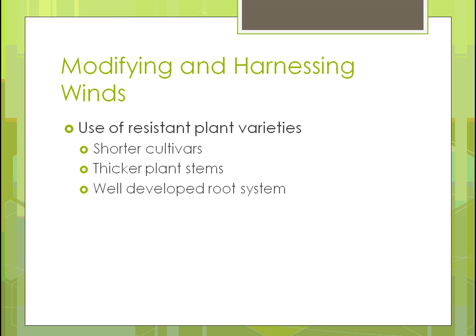Using resistant plant varieties is another strategy. For wind, shorter cultivars won't be affected as much because taller plants have a weaker structure. This is especially important for harvestable plants. Plants with thicker stems can also make a difference, and genetics are being used to create plants with stronger, thicker stems. Plants with deeper root systems are also more wind-resistant, though how deep roots can go depends on the type of soil and how well roots can penetrate it.